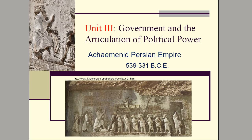We are ready to start with the first civilization we'll be dealing with: the Achaemenid Persian Empire, which lasts from 539 to 331 BCE. We talk about the Achaemenid Persian Empire specifically — not just the Persian Empire — because we'll be talking about a different Persian Empire a little bit later in the semester. This empire is named after the family of the Achaemenids. You want to be able to differentiate between this early Persian Empire, from 539 to 331, and the later one.